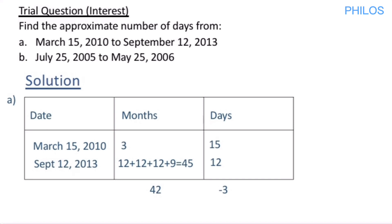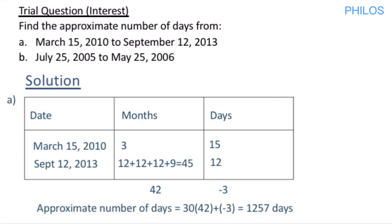Since we are dealing with approximate number of days, we assume all months have 30 days. So we multiply the month difference by 30 and add the day difference: 30 × 42 + (−3). On the calculator, 30 times 42 minus 3 gives 1,257. So there are approximately 1,257 days from March 15, 2010 to September 12, 2013.